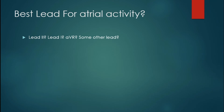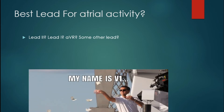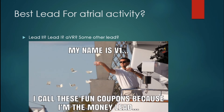Before we go into finding these flutter waves, we need to know the best lead to find atrial activity in. Is it lead 2, our usual favorite? Lead 1? AVR? Actually, it is going to be V1. If you watched my narrow complex tachycardia lecture, you'll remember this is your money lead. The reason is that ideally you're placing this electrode over the SA node or right atrium. This isn't a 100 percenter though, so you should always scour the whole 12-lead for any atrial activity.